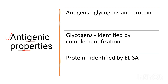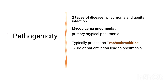Mycoplasma has glycoproteins and proteins as antigenic markers. Glycoprotein is identified using the complement fixation method. Proteins can be easily identified by ELISA.